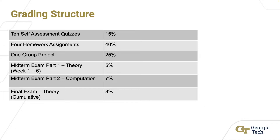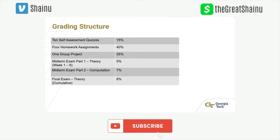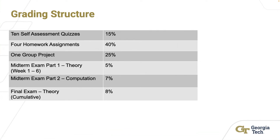Then you have one group project, which I'll discuss more in the next slide. We have a midterm part one, which is theory based, covering content from weeks one through six. Both theory and computation add up to about 12% of your final grade. The theory is pretty much multiple choice, and you get a one-sided cheat sheet. The computation part is open book coding, and you have a full one week to finish this midterm.